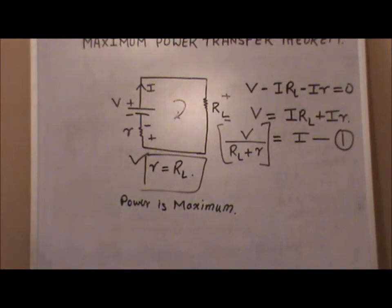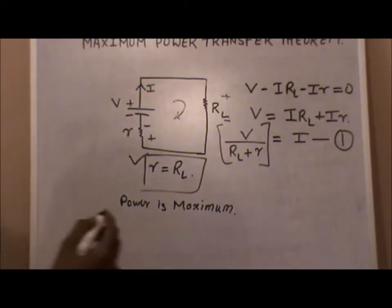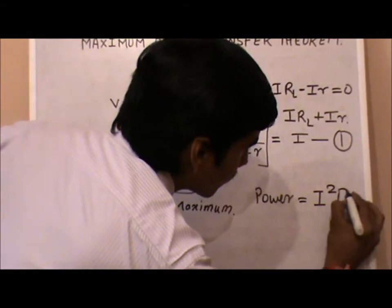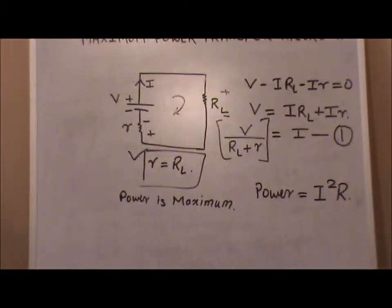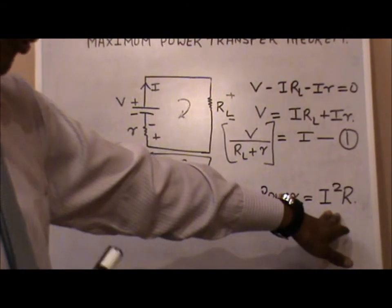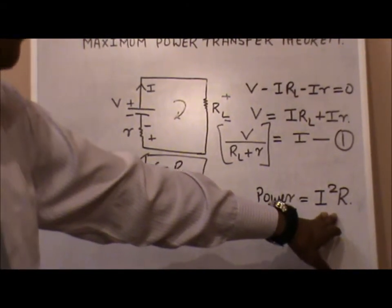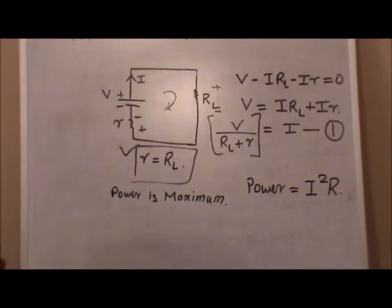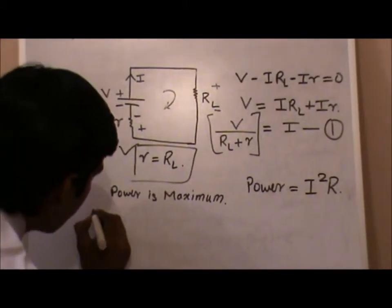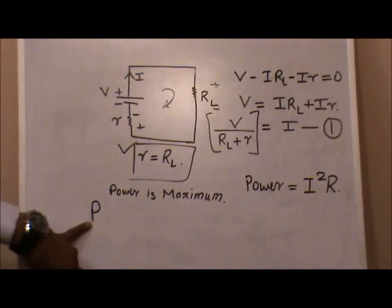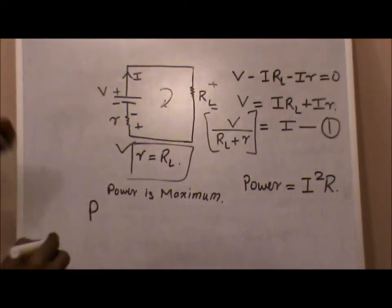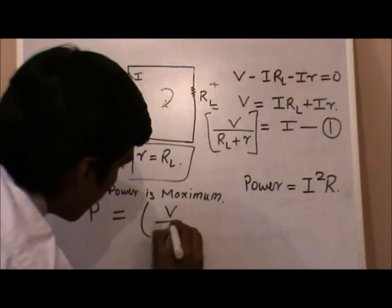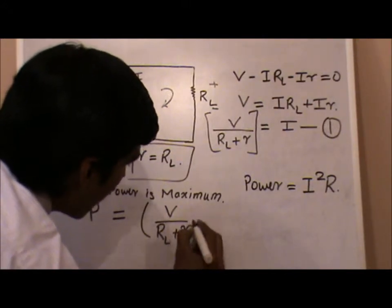Coming to the power, we have the formula P equals i squared times R. Whatever current is flowing must be squared and multiplied by the resistance to give you the power. In this case, I am denoting this power as P. Using equation one, the value of i is substituted.